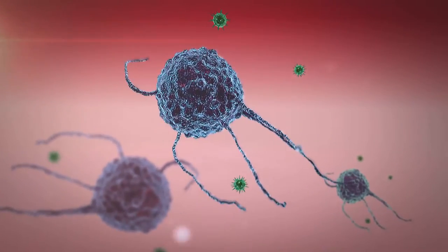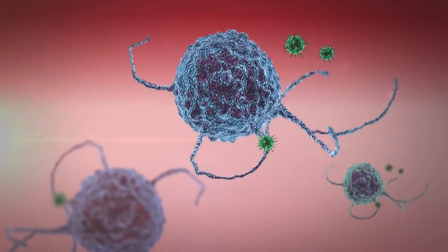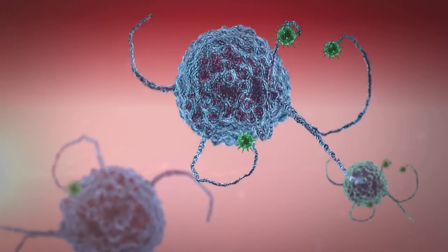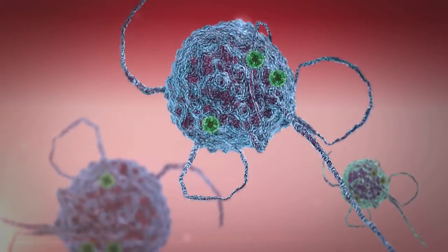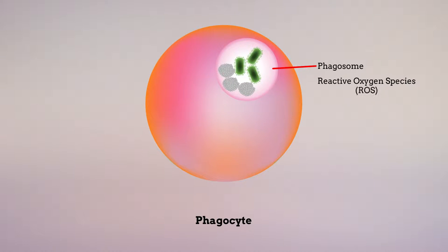In the human immune system, specialized cells called phagocytes identify bacteria and then capture these infectious pathogens within compartments called phagosomes. Inside these compartments, toxic reactive oxygen species, or ROS, destroy the bacterial cells. However, how phagocytes generate ROS at the right place and time to kill bacteria but not host cells is still unclear.